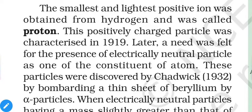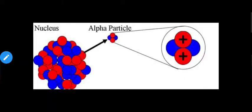The smallest and lightest positive particle was obtained from hydrogen and was called the proton — when the electron is removed from hydrogen, only the proton is left. This positively charged particle was characterized in 1919. Later, a need was felt for the presence of an electrically neutral particle as a constituent of the atom. This particle was discovered by Chadwick by bombarding a thin sheet of beryllium with alpha particles.